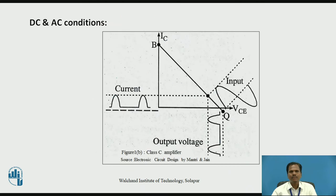This figure shows DC and AC conditions for the Class C power amplifier. The DC operating point of the Class C amplifier is selected below the cutoff line. So, for variation of the input base signal, the output current flows in the form of pulses as the working of the Class C amplifier moves along the load line.